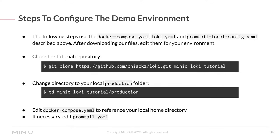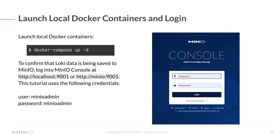Now it's time to run everything. We've discussed Docker Compose, Loki config, and Promtail local config. What you need to do is clone the listed repository, then change directory into the local production folder under that repository, edit docker-compose.yaml to reference your local home directory, and if necessary edit the scrape configuration in promtail.yaml. Then go to a command prompt and run docker compose up, letting things download and run for a couple of minutes.